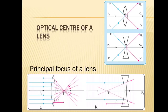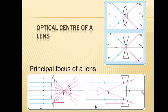Light rays parallel to the principal axis falling on the convex lens come together and get focused at a point on the principal axis, so this type of lens is called a converging lens. Rays traveling parallel to the principal axis of a concave lens diverge after refraction such that they appear to come out of a point on the principal axis — the principal focus of the concave lens. So this type of lens is called a diverging lens.